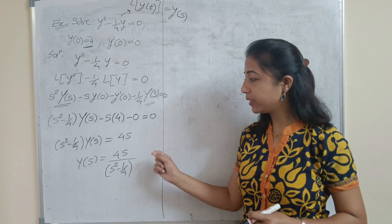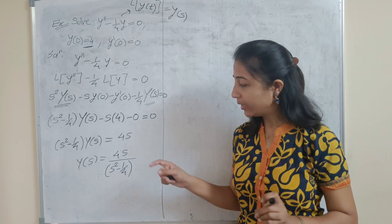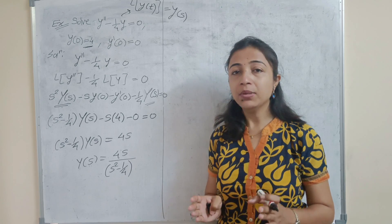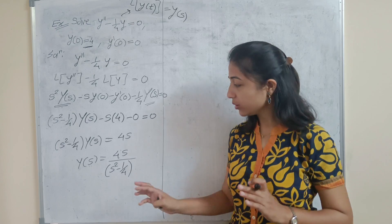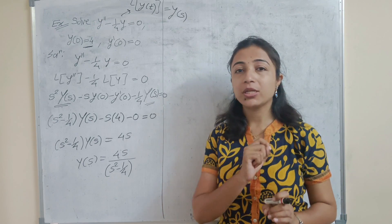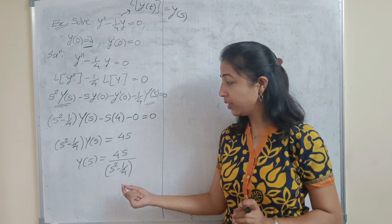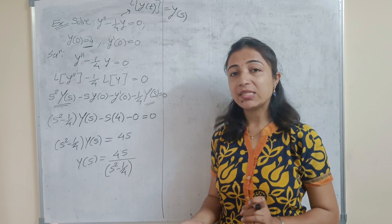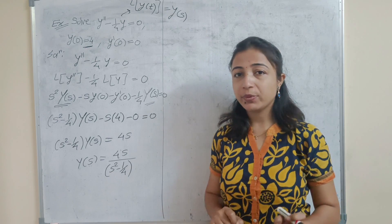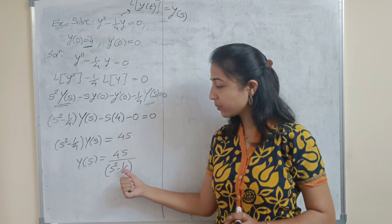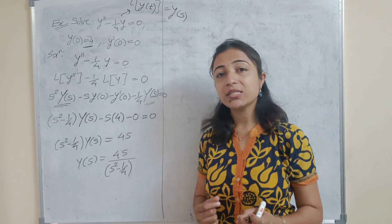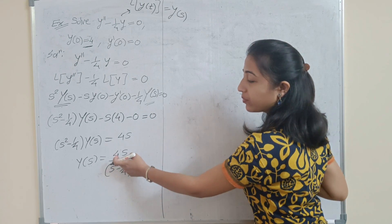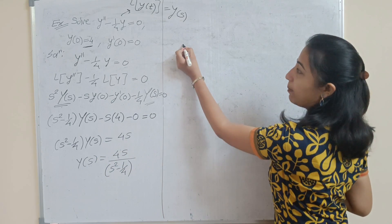The next step is to find the inverse Laplace transform. Whenever you get Y(s), observe the term and check whether it matches a standard formula. If not, try the partial fraction method; if partial fractions don't apply, try completing the perfect square. You need a strong base in standard Laplace formulas. Notice that s/(s² + a²) is the formula for cosine, but here we have a minus sign, and minus appears in the hyperbolic formulas. So this is the hyperbolic standard formula.